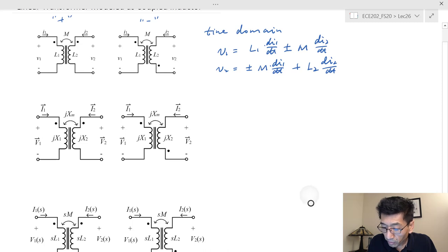Therefore, in phasors if we write the equation that's going to be something like V1 equals jωL1 times I1 plus or minus jωM times I2.